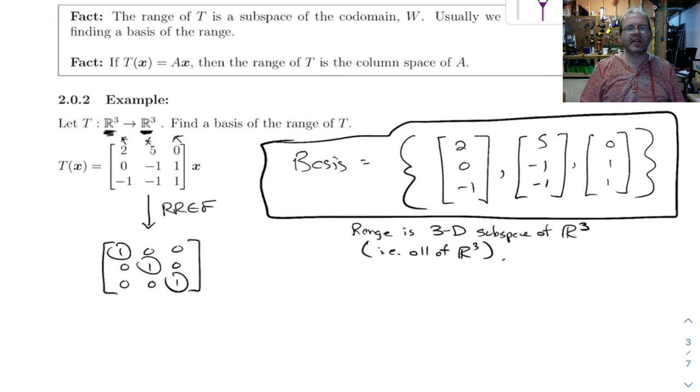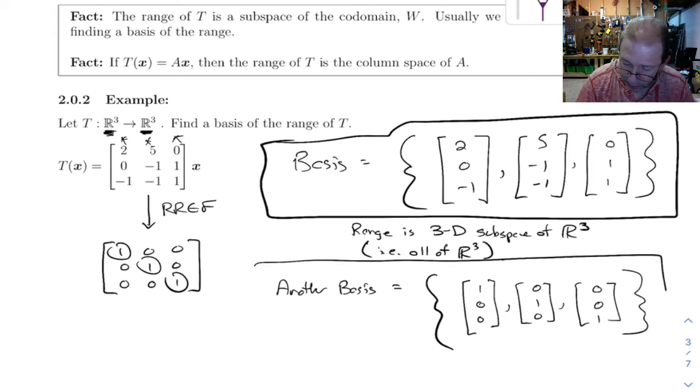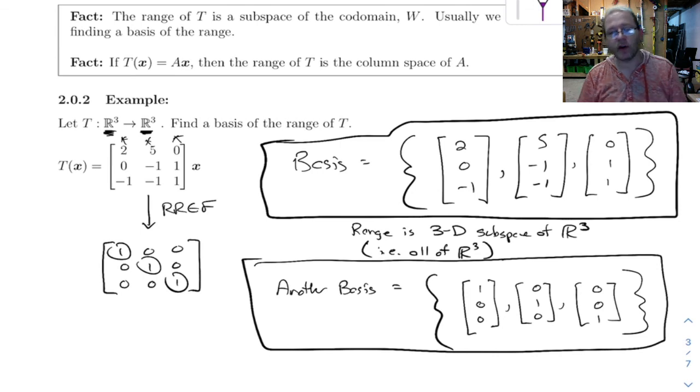So if we wanted to, we could say instead of using those three vectors as our basis, another basis would be, well, we could pick any basis that we wanted from R3. So pick any three vectors that don't lie in the same plane. Well, the nicest basis would just be the standard basis. So since it's all of R3, we can pick that out as the standard basis and we're done.